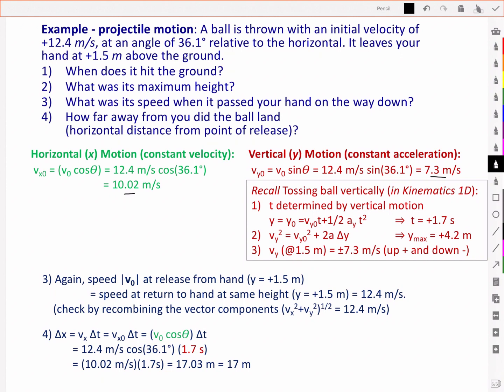When we determine the time of the vertical motion we use this equation here where we know the acceleration due to gravity. We knew the initial velocity, upward velocity. We knew the initial position at 1.5 meters. And we were trying to find the position when it hits the ground at y equal to 0. And using that equation we found then that the time, the total duration or time of flight was 1.7 seconds.